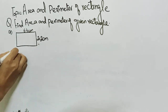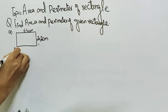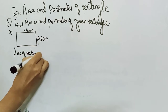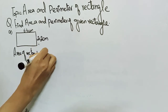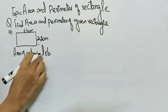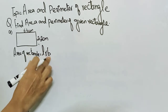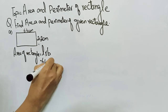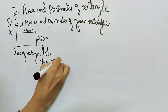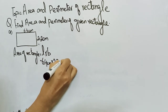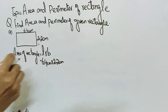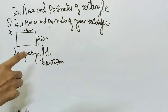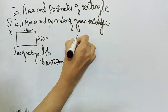We have to find the area first. We will write here: area of rectangle equals length multiplied by breadth, which is six point four centimeter multiplied by two point two centimeter.